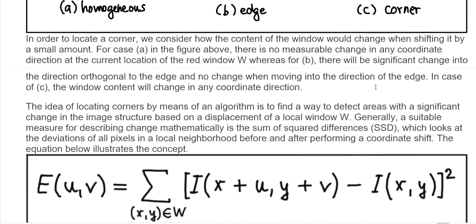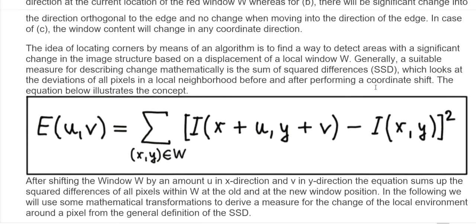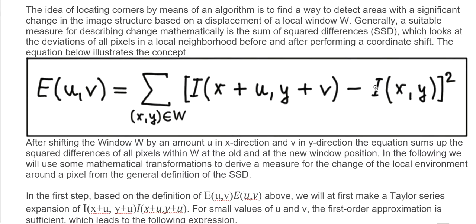The idea of locating corners is to find, by means of an algorithm, areas with significant change in the image structure based on the displacement of local window W. A suitable mathematical measure for describing this change is the Sum of Squared Differences (SSD). We calculate the SSD by looking at the deviation of all pixels in a local neighborhood before and after performing a coordinate shift.